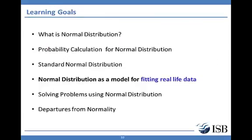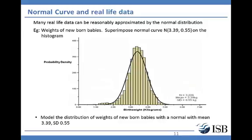Next, we will discuss how normal distribution can be applied in solving real-life problems — that is, the application of normal distribution as a model for fitting real-life data. This histogram is produced from data related to the weights of newborn babies. Superimposing a normal curve with mean of 3.39 and standard deviation of 0.55, we see that the histogram approximately follows the shape of the normal curve, indicating that this data can be approximated by a normal distribution.